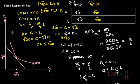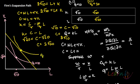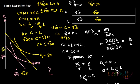This new isocost line shifts parallelly outward to the point where Q = 20. Both points E1 and E2 — at labor = √10, capital = √10 and labor = √20, capital = √20 respectively — are the cost-minimizing input choices for their given levels of Q.